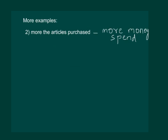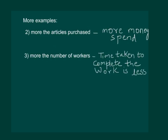Let us take up another example. If we employ more people to do a particular work, then obviously time taken to complete the same work is less. Hence, time is changing automatically if the number of workers is changing. Again, these two quantities are interdependent.